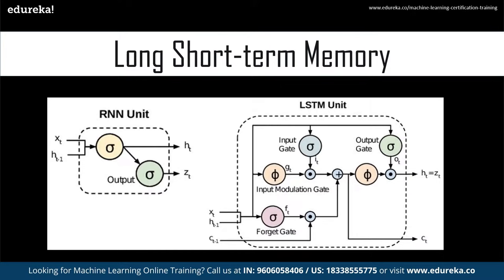LSTM is a modification to the RNN's hidden layer. It is capable of remembering weights and inputs over a very long period of time. In LSTM, in addition to the hidden state, a cell state is also passed to the next block, allowing it to capture long-range dependencies. LSTM uses three main gates: the forget gate (removes information no longer useful), the input gate (adds new information to the cell state), and the output gate (adds useful information to the output). This gating mechanism lets the network learn when to forget, ignore, or keep information in memory.